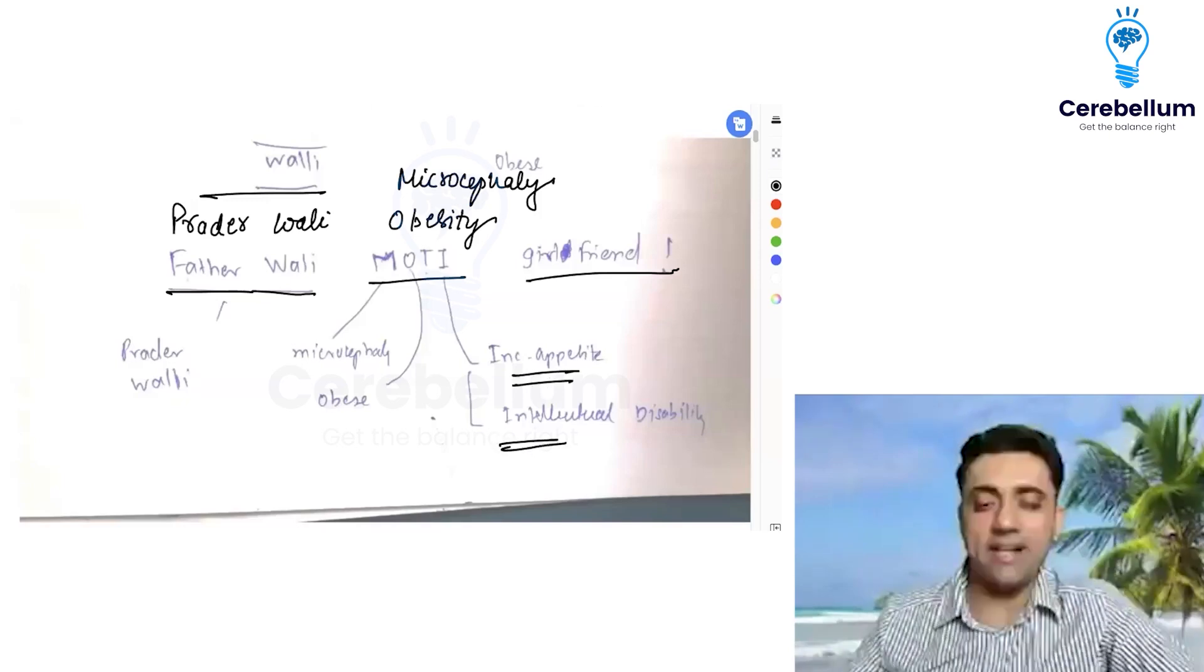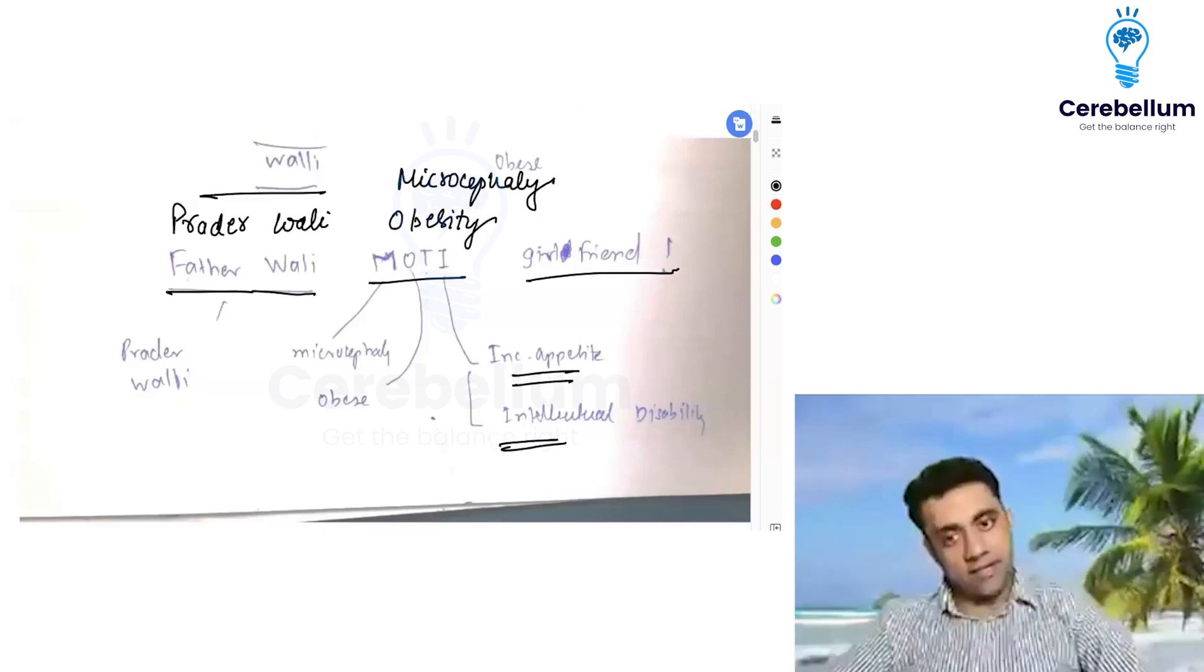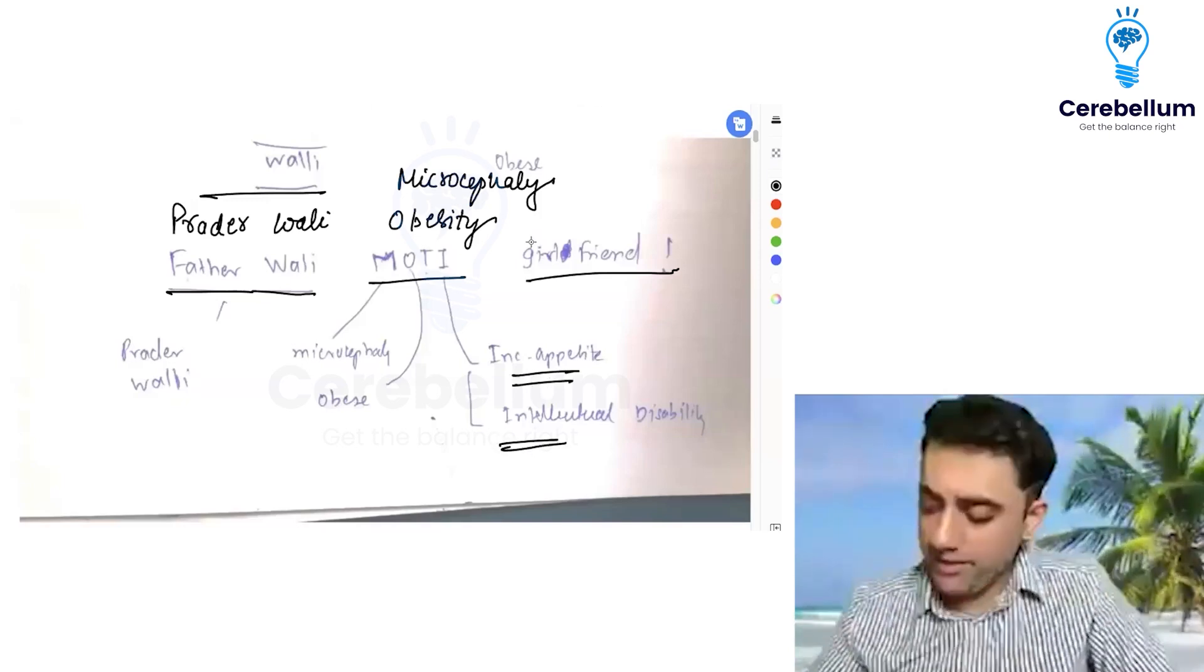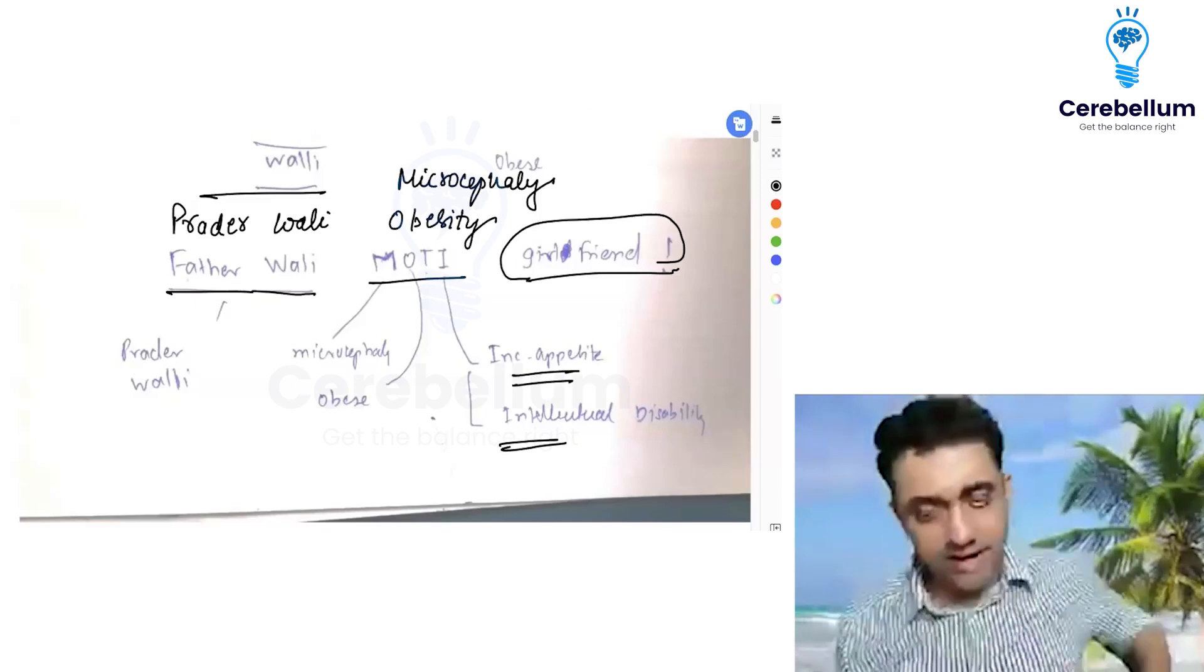MOTI - I for increased appetite and intellectual disability. Increased appetite and intellectual disability, and girlfriend is just added to the mnemonic.